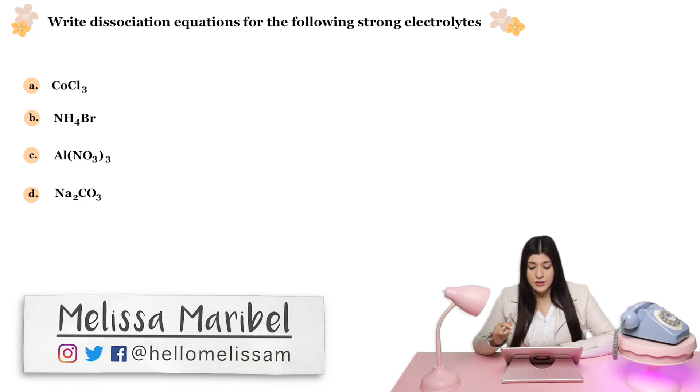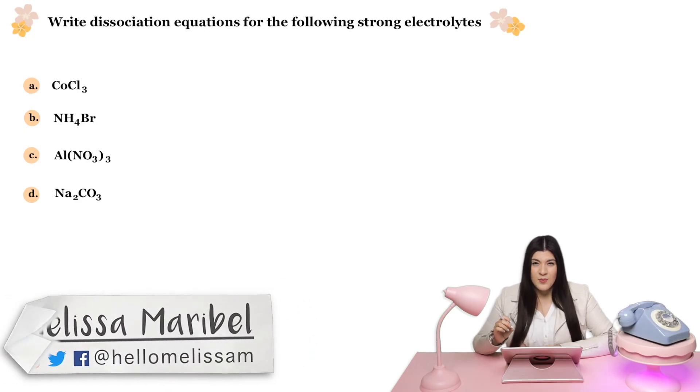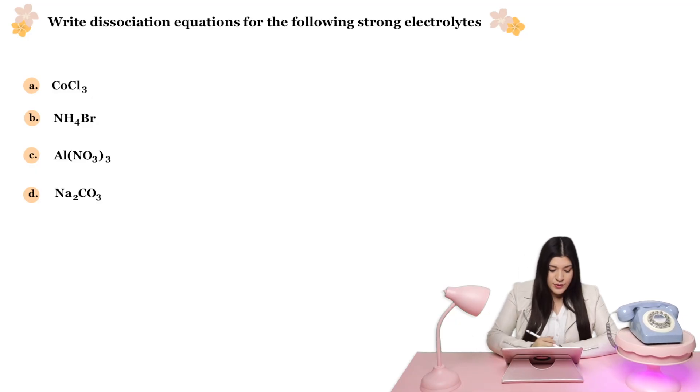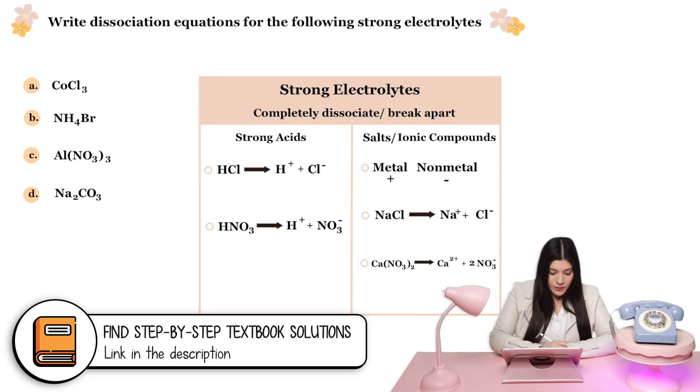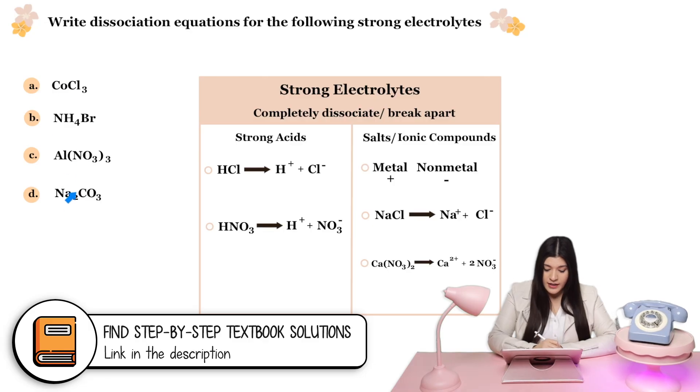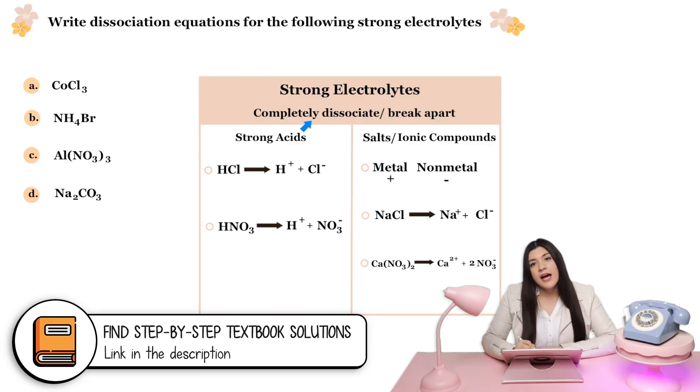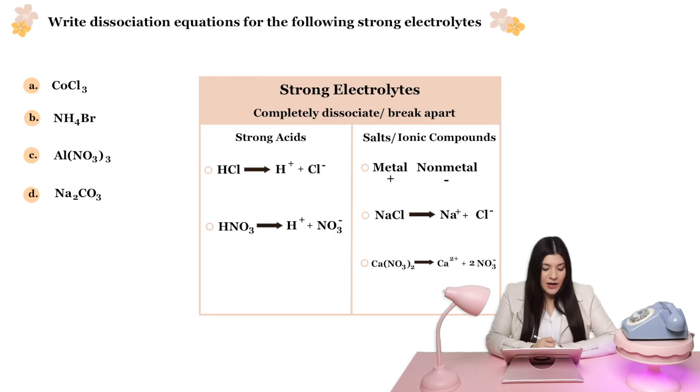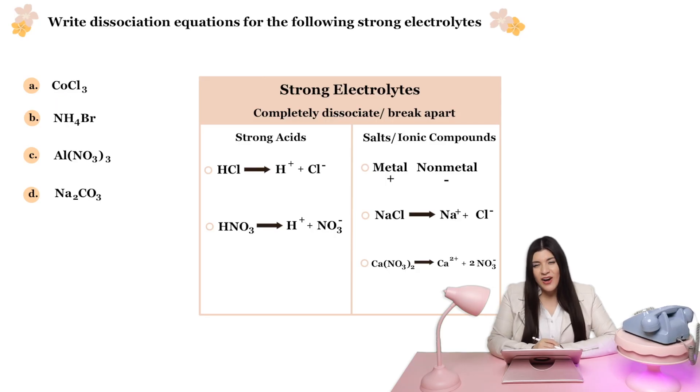So we're writing dissociation equations for strong electrolytes, but let's go over what a strong electrolyte even is. With strong electrolytes, they completely dissociate, and what dissociation refers to is just breaking apart into ions. So when a compound, like something like this, breaks apart or dissociates, it completely breaks apart into its ions. It's really similar to net ionic equations.